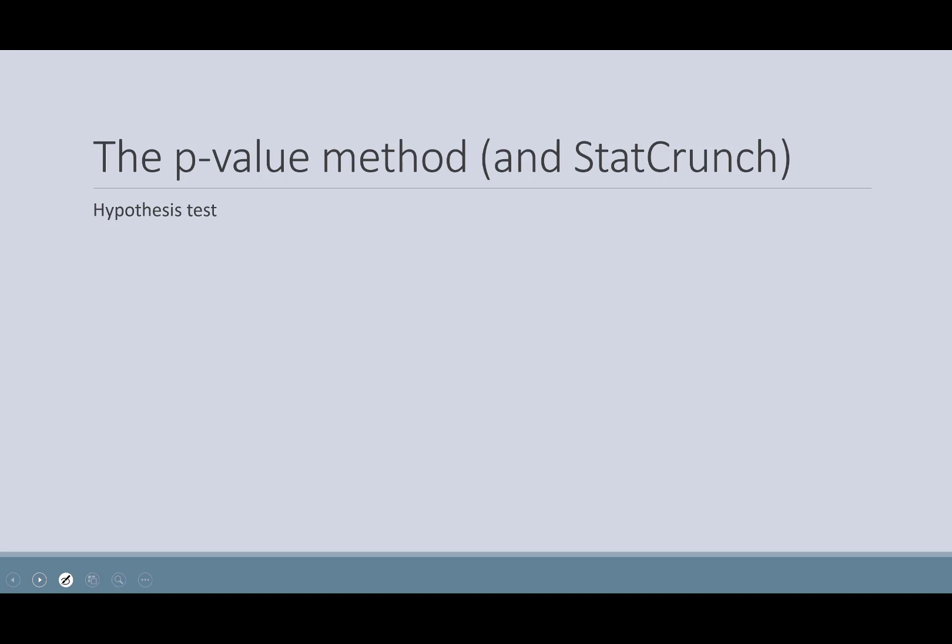So now, in addition to using the critical value method that we had just looked at, we can also use the p-value method, and we're going to do this using StatCrunch. So, with the p-value method, the first thing we have to do is we have to set up our hypothesis test.